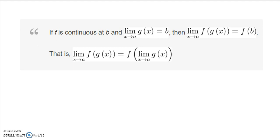We're going to look at problems from unit quiz number one from the online AP source. First, we're looking at this theorem — and this is not a biconditional. If a limit of g(x) as x approaches a equals b, then the limit of a function composition f(g(x)) as x approaches a equals f(b), and that's true if f is continuous at b, the inner value.